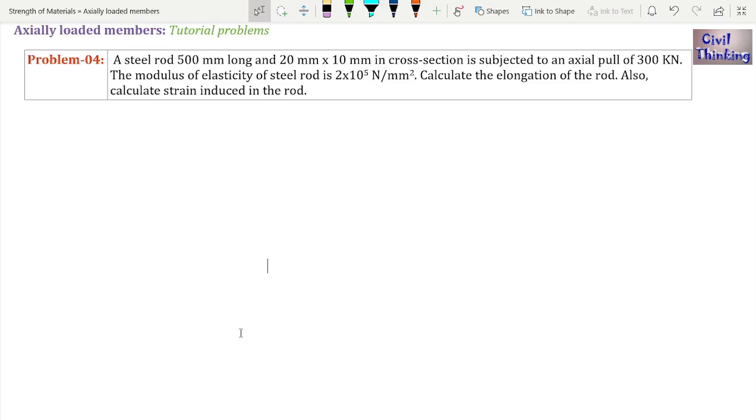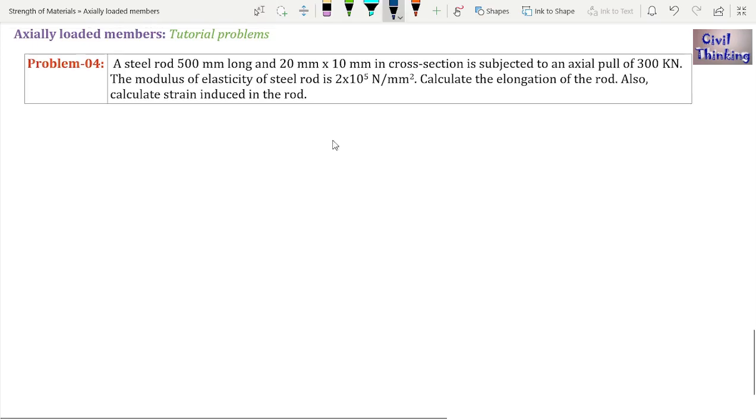Now coming to the problem. The problem is on your screen. A steel rod 500 millimeter long and 20 mm by 10 mm in cross section is subjected to an axial pull of 300 kilonewton. The modulus of elasticity of steel rod is 2 into 10 power 5 newton per millimeter square. Calculate the elongation of the rod. Also, calculate the strain induced in the rod.